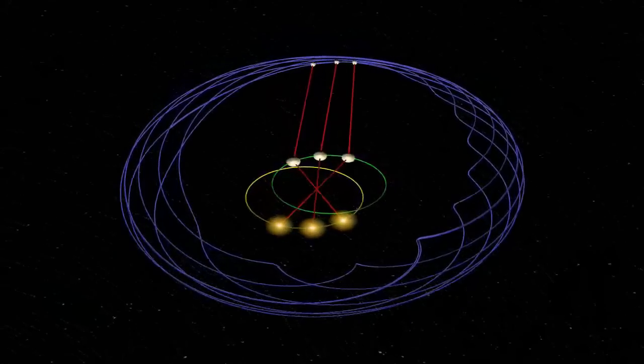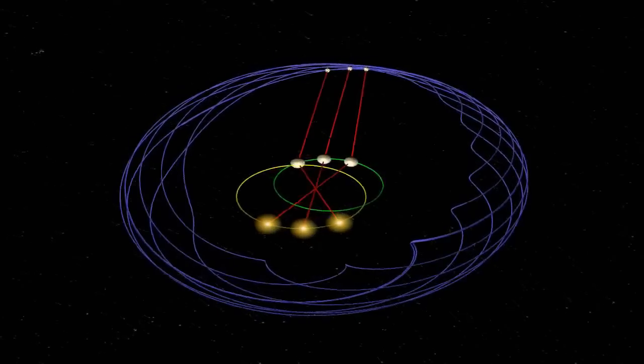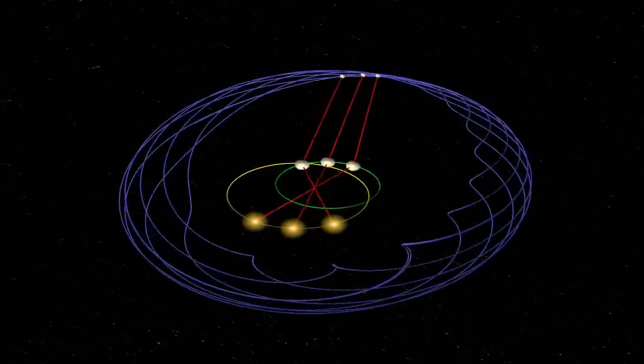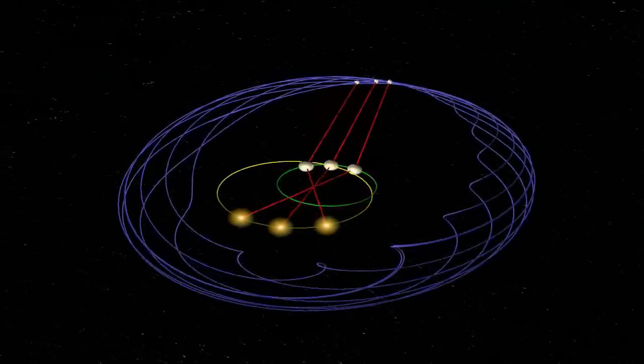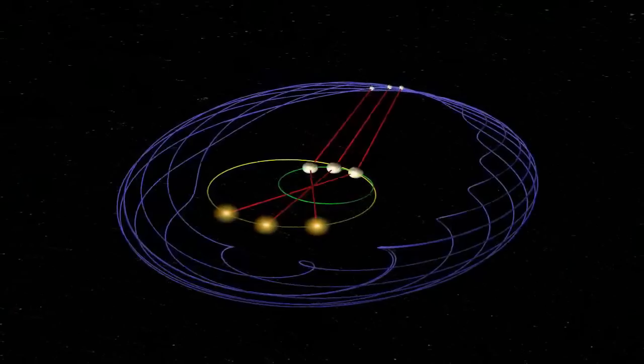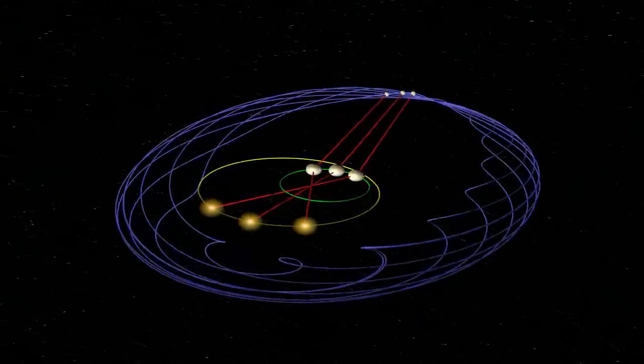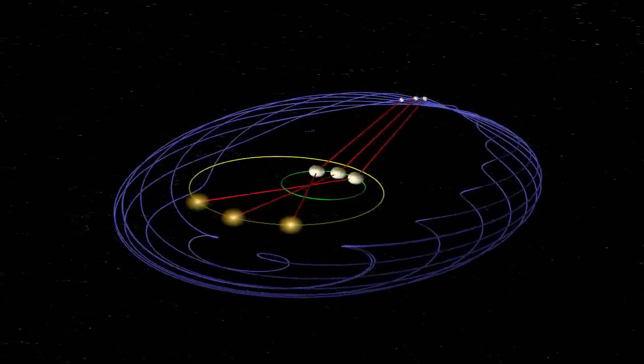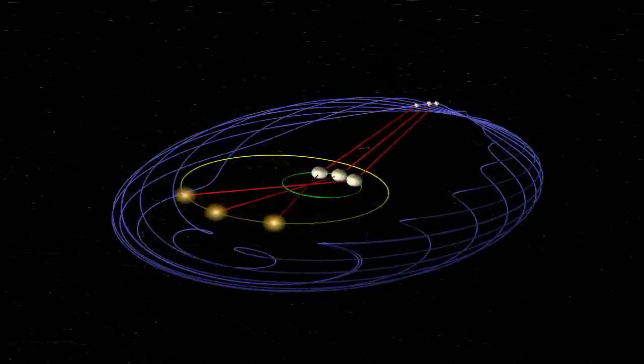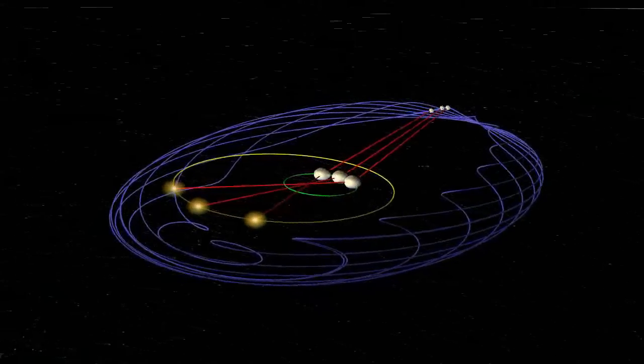But perhaps more curious is the orbit of Ceres. Previously, from the Sun's perspective, Ceres repeatedly blazed the same path. Now, since the Sun is no longer still, Ceres' orbit cannot keep its composure.